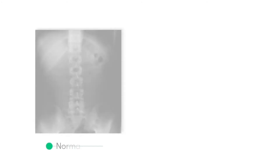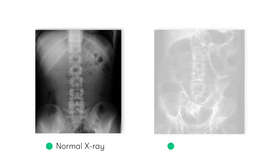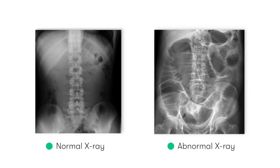Here you can see a normal abdominal X-ray, and next to it an abdominal X-ray that shows large bowel dilatation in keeping with the presence of a large bowel obstruction. I'm sure you'll agree it's pretty clear to see that there's an obvious difference between the two.